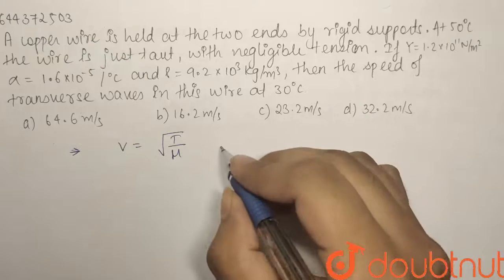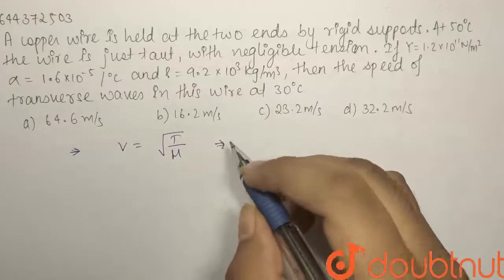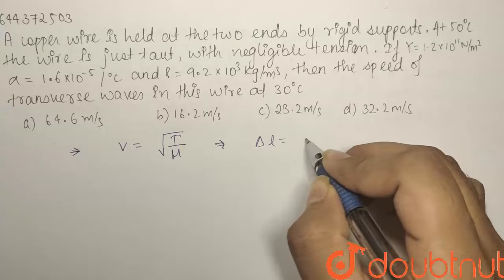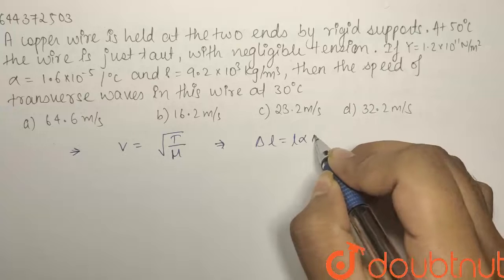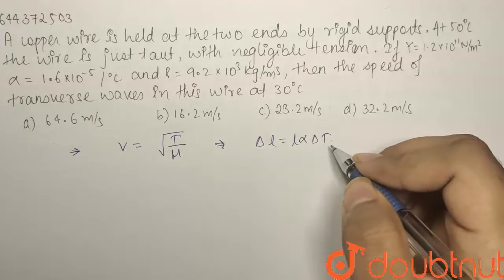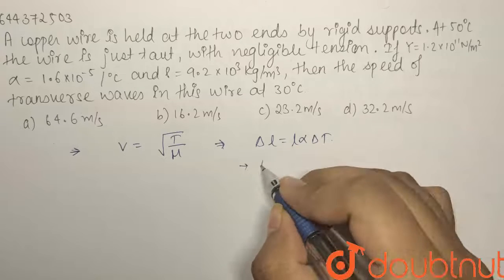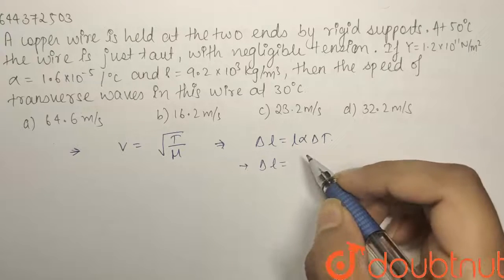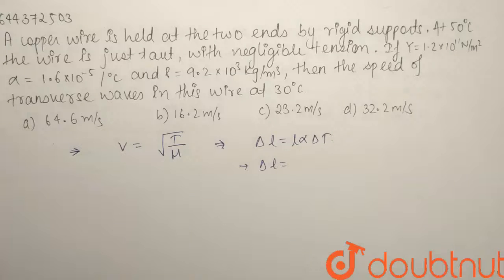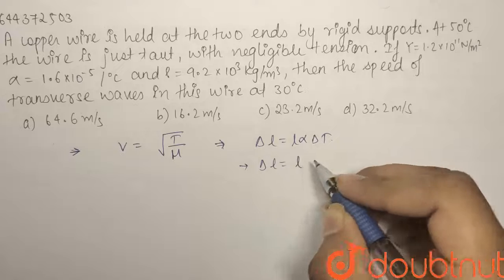Let us first find out the value of delta L. What we know is that delta L, that is change in length, will be L × alpha × delta T, where L is the initial length. From here what we will get is delta L equals to the length of the wire. We will have to assume it, no value is given in the question.